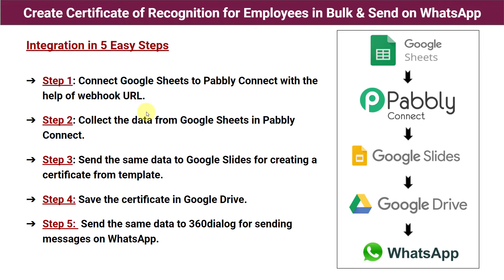These are the steps to create the automation between Google Sheets and WhatsApp. Step one: connect Google Sheets to Pabbly Connect with the help of a webhook URL. First, log into your Pabbly Connect account, then connect Google Sheets with Pabbly Connect using the webhook URL — an address provided by Pabbly Connect — by copying and pasting it into your Google Sheet.